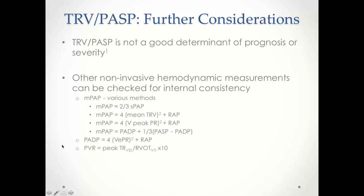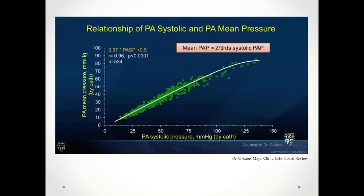There is also a way to calculate PVR by echo, though it is not very reliable. Data from the Mayo Clinic echo board review shows approximately 500 patients who received right heart cath compared with two-thirds of their estimated systolic pulmonary arterial pressure, finding a very good correlation coefficient of 0.96 (p < 0.0001). This gives a quick, easy way to estimate mean pulmonary arterial pressure if you have a good estimated PASP.